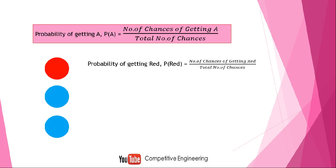There is only one red ball, so I can take only one red ball — that means only one chance. So the number of chances of getting red is one. The total number of chances: there are three balls, so I can take three chances. Therefore, the probability of getting red is one divided by three, which is 1/3, that comes to 0.333 and so on.